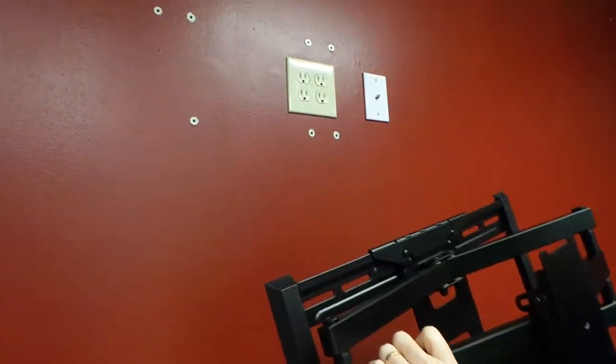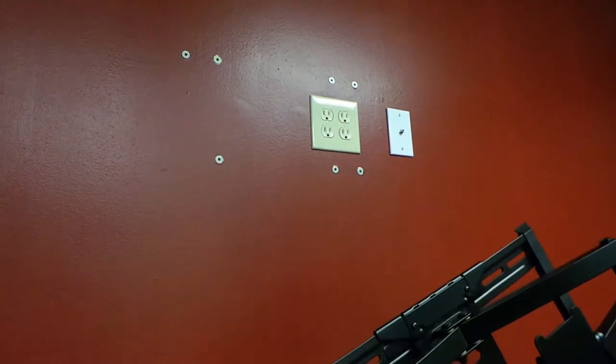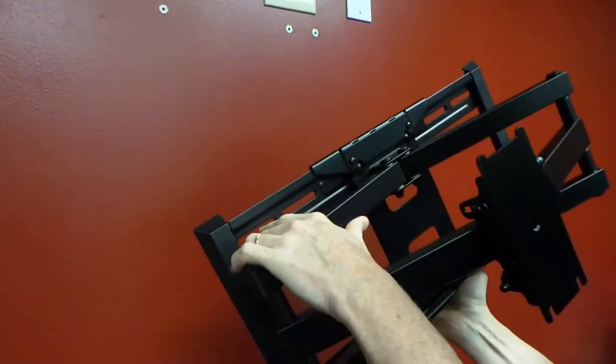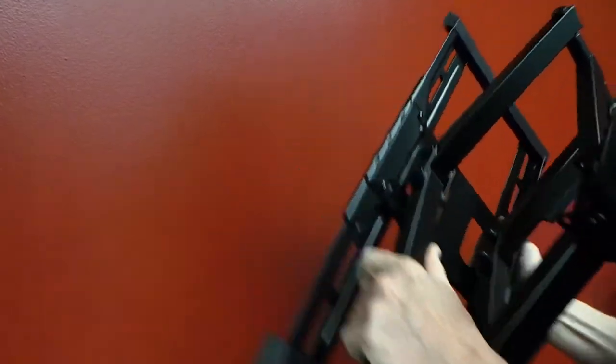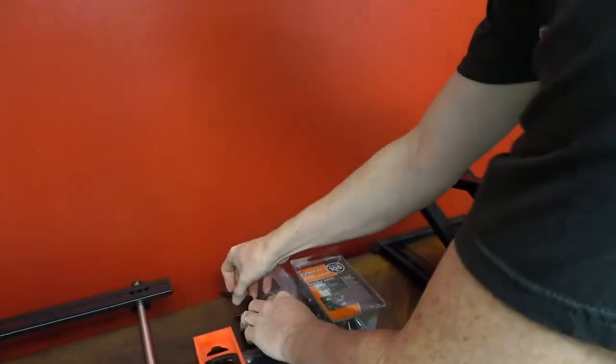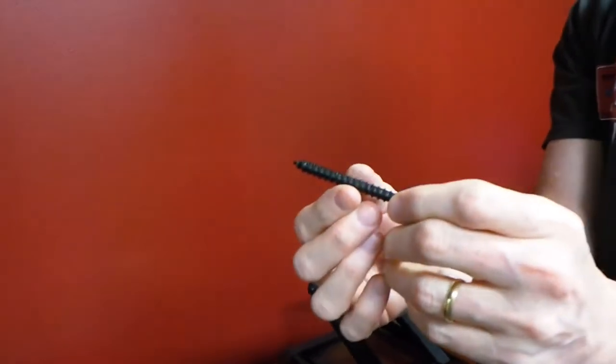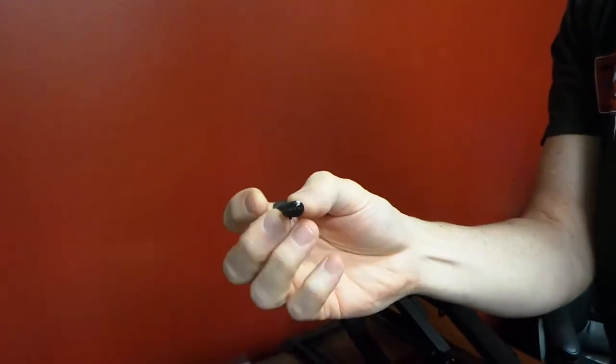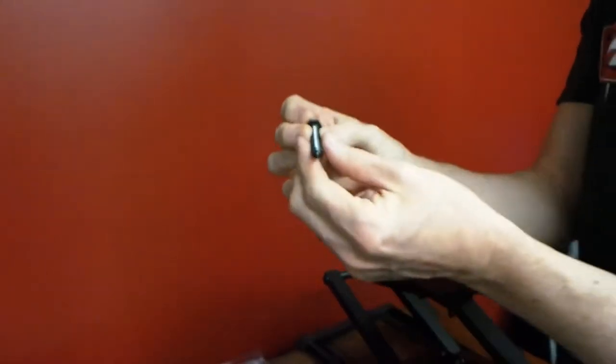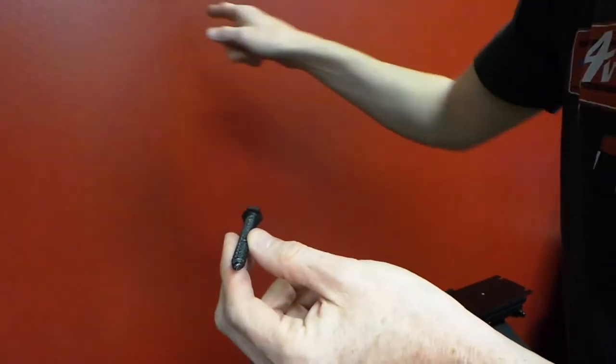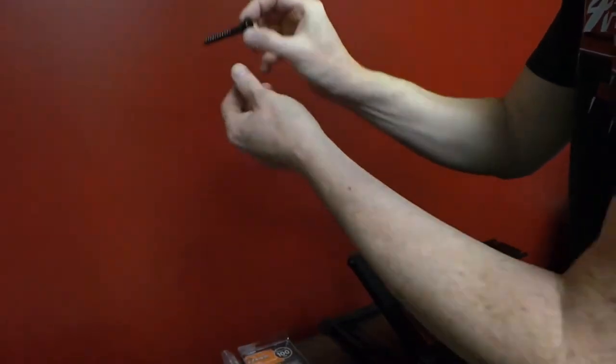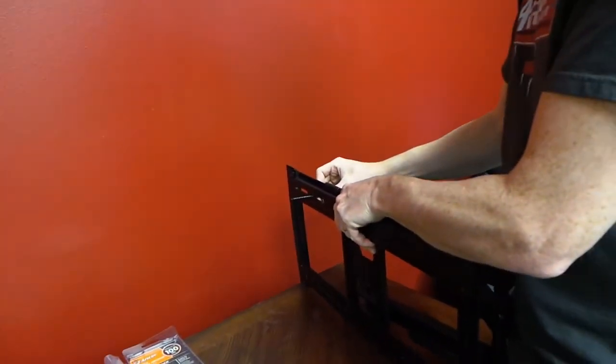So you'll notice that this is the part that goes on the wall. There are some little channels right here, little screw places. And what they do is they send you in the kit these giant bolts. Now these are meant to go into a stud. So you could use a stud finder on the wall, pre-drill a small hole, and then bolt these right through here, like so, to hold in the wall.